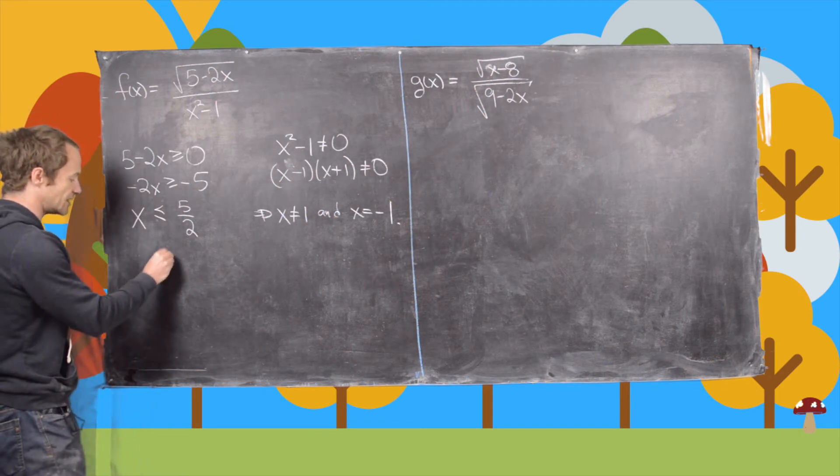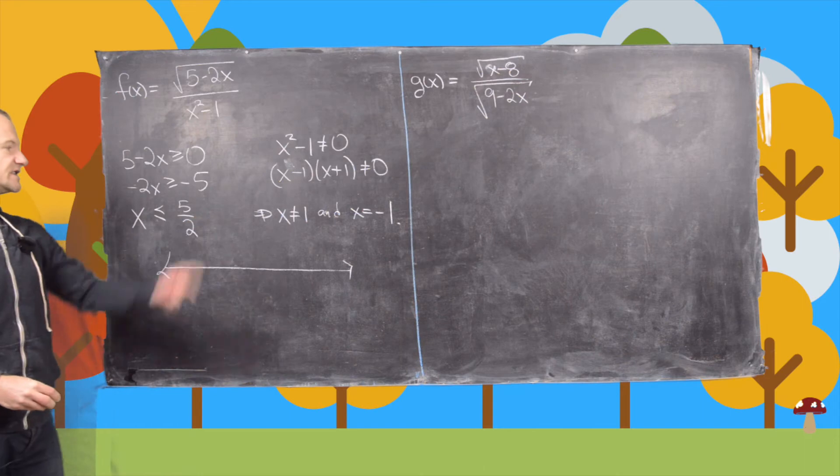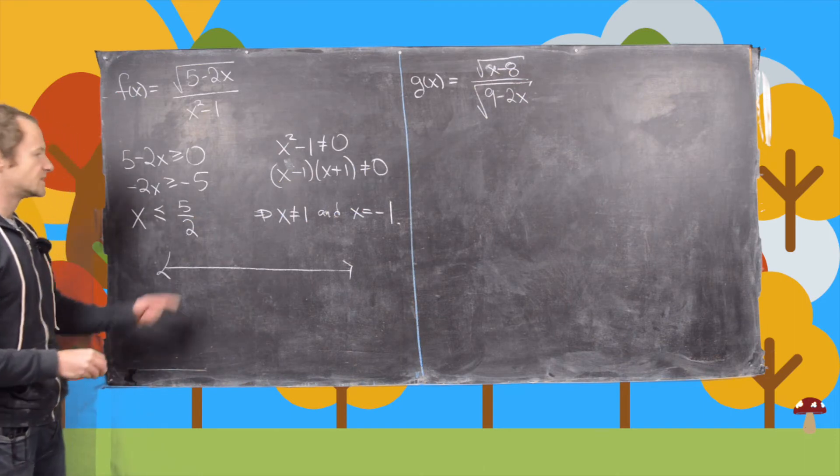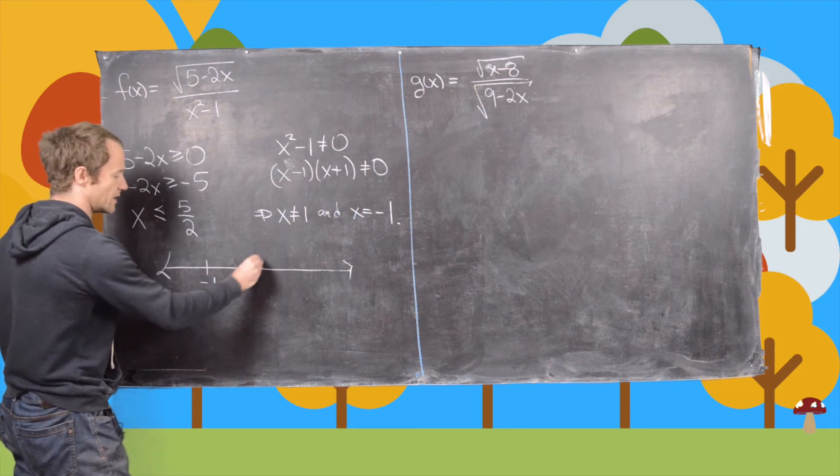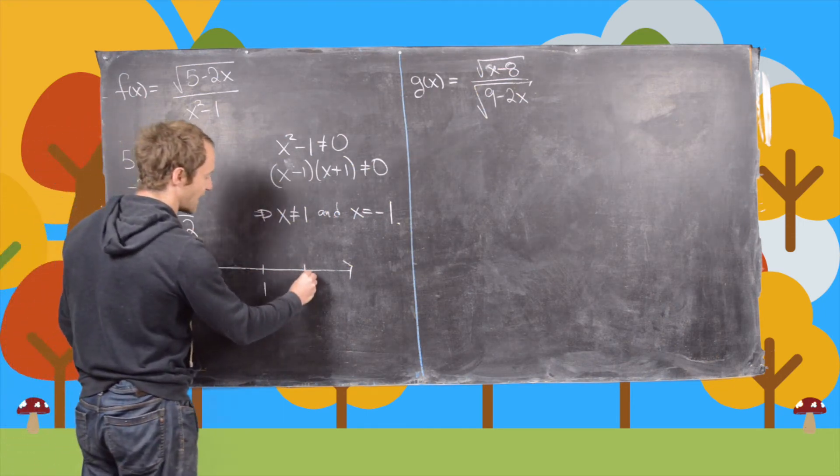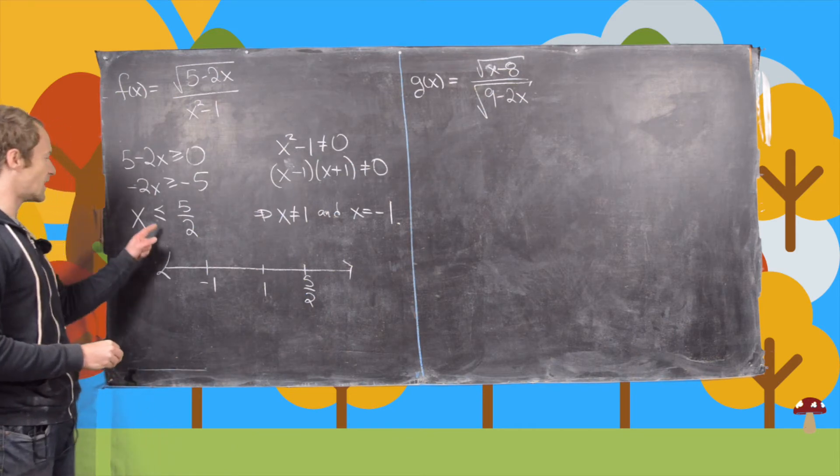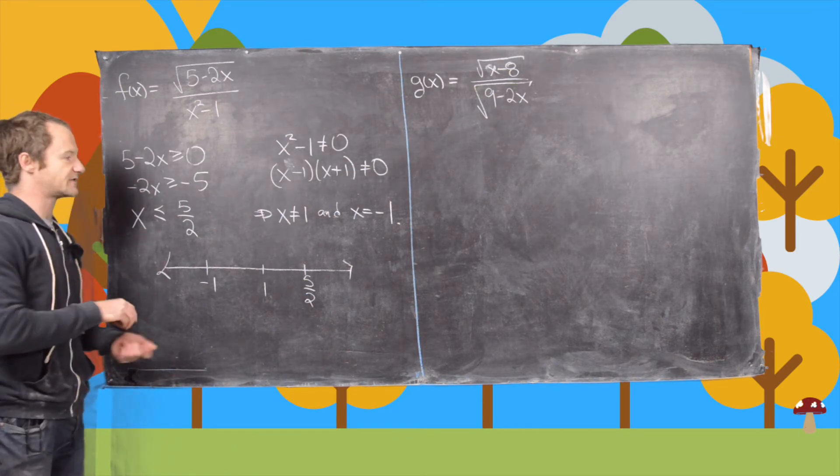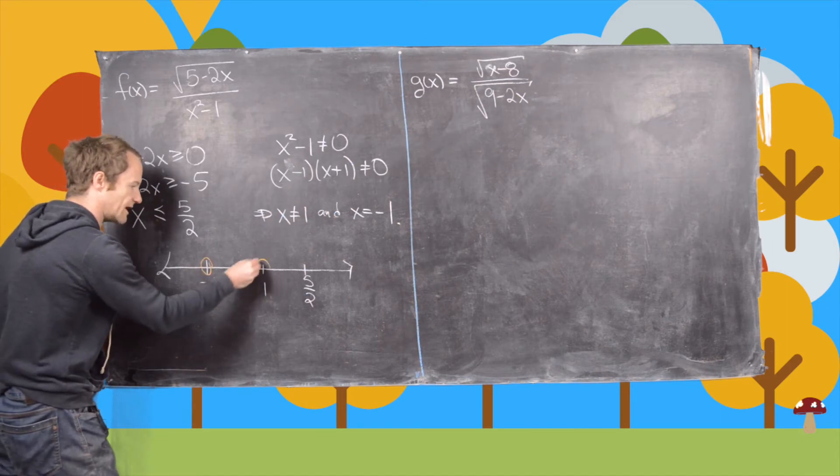I think a good next step is to graph this condition on the number line. So the important points here are negative 1, 1, and then 5 halves, which is 2 and a half. And notice here we have to not include 1 or negative 1, so we're going to put little bubbles around 1 and negative 1.